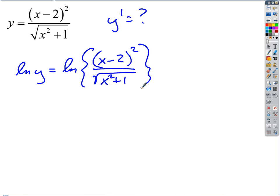So, what's that do for me? On the left side, it made things a little more complicated, if anything. But on the right side, look what we got. How can I use my properties of logs to rewrite this? Okay, good. So we got the log of the numerator minus the log of the denominator.